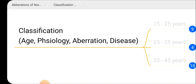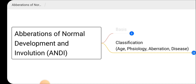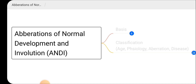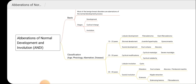This is the classification used in ANDI for aberrations of normal development and involution. The ANDI classification encompasses development, cyclical change, and involution of the breast.